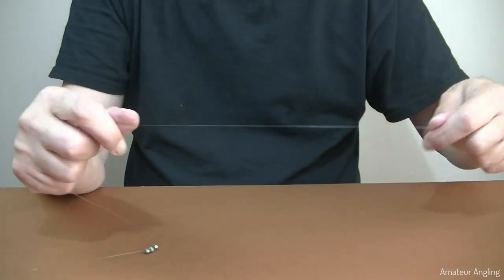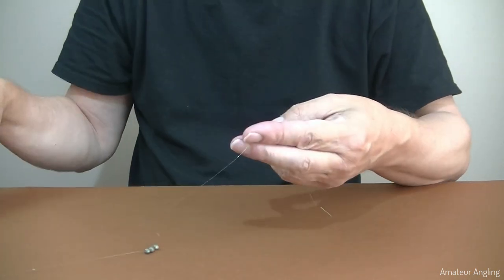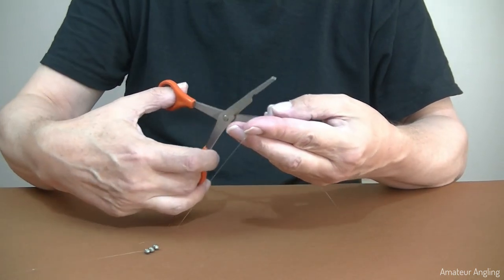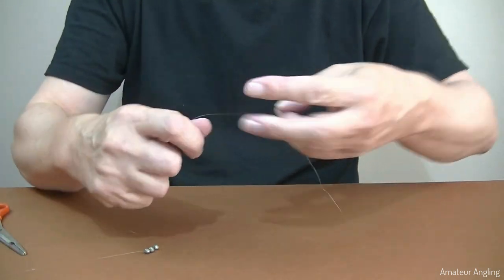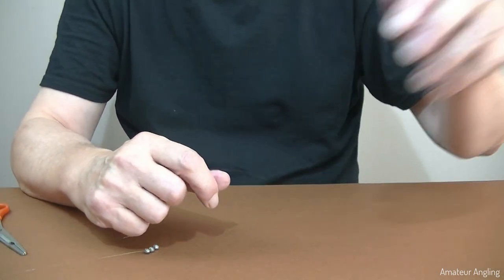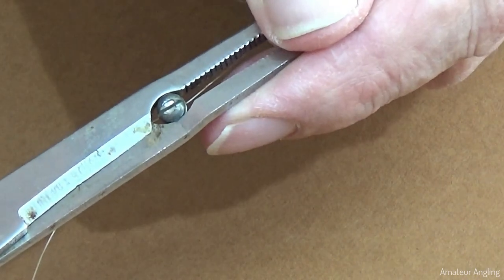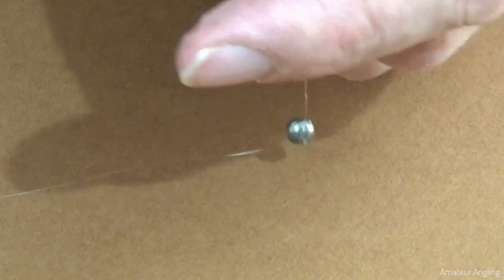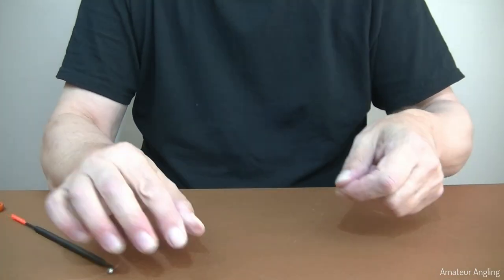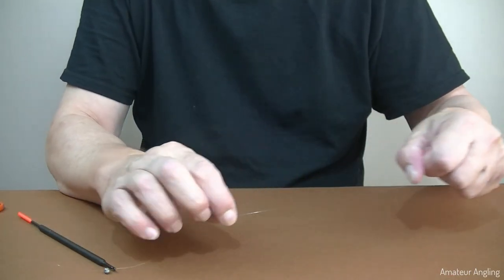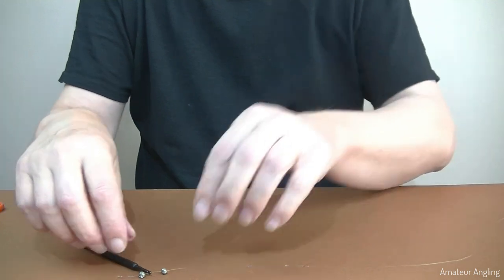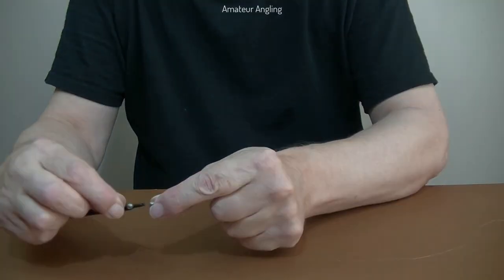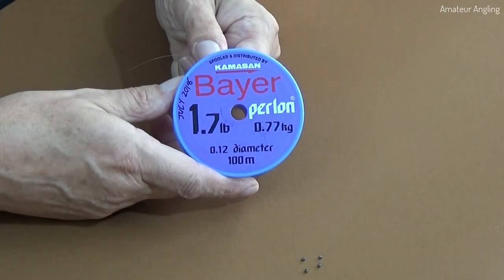Once the float locking shot and any additional shot are on the line, cut off and safely dispose of the damaged end. I have used this method on monofilament lines from two and a half pound (0.16mm) to four and a half pound (0.20mm) with non-toxic split shots from size six up to swan shot.